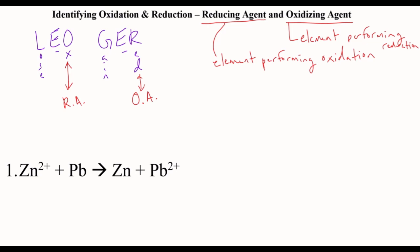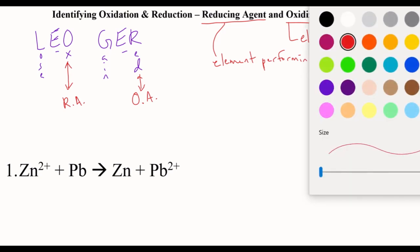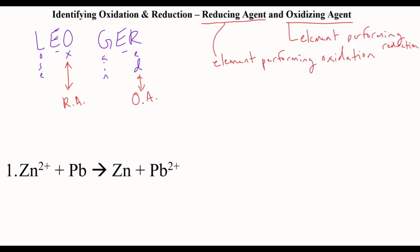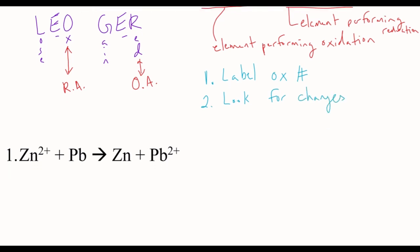For these problems, what you're going to have to do is label the oxidation numbers, and then label which one is being oxidized or reduced. You do that by looking for changes. I'm not going to explain the oxidation numbers in this — if you don't know how to do oxidation numbers, go watch the other video, because that will not be explained here.